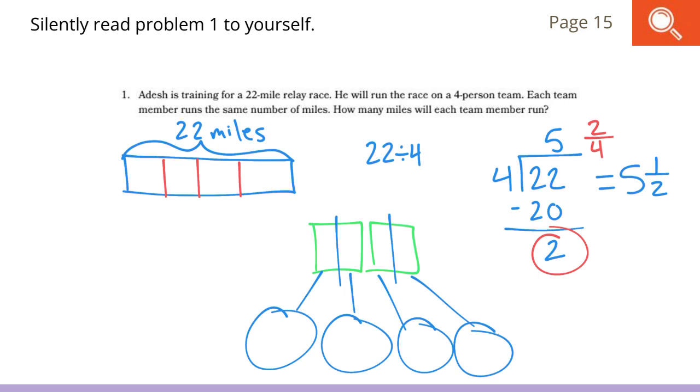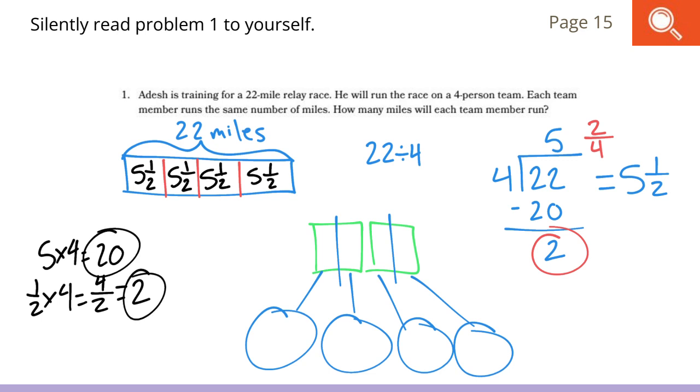If I think about this in my tape diagram, I could show that in each group, which represents a person, five and one half miles would be run by each person. If I add this up again, we would do five times four, which gives us the 20 miles. And then we have the one half times four, which would be four halves, which is another two miles. We would have 20 and two miles, which is our original 22 miles. This is one way we could have shown our division. There are other ways for sure. But you would each get five and a half miles for each person running this race.